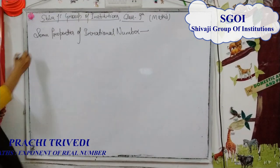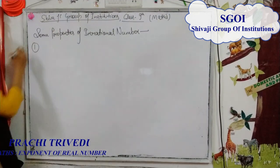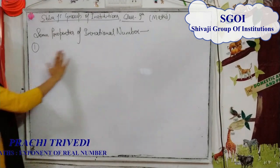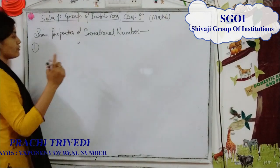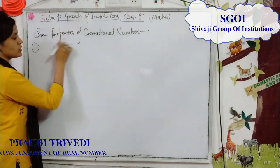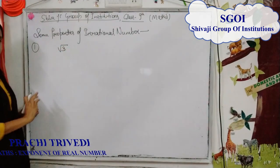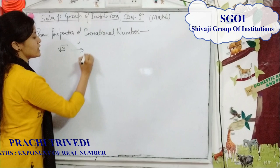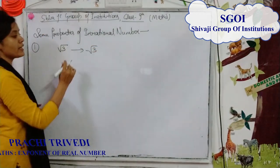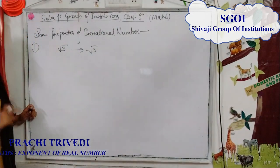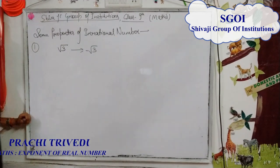The first property is: the negative of an irrational number is always an irrational number. For example, we know that root 3 is an irrational number. Then the negative of root 3 is minus root 3, and minus root 3 is also an irrational number.